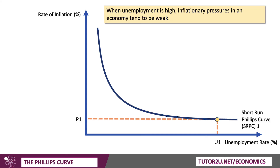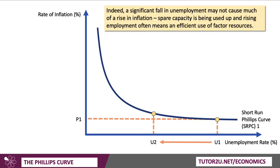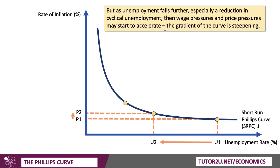That's shown on the y-axis. When unemployment falls from U1 to U2, it may not cause much of a rise in inflation. Spare capacity is being used up and there's lots of excess labour supply. Rising employment actually often means a more efficient use of factor resources, so there's little big risk of a rise in inflation as unemployment falls from U1 to U2. The Phillips Curve is fairly flat at that point, and we'd say there's a favourable trade-off between jobs and prices — unemployment is down from U1 to U2 without a significant spike in inflation.